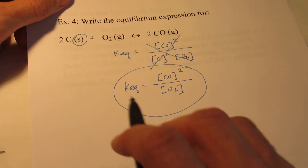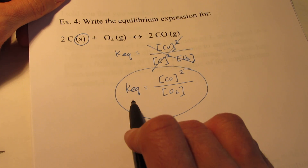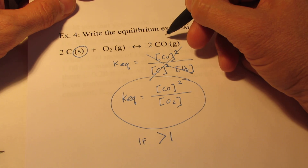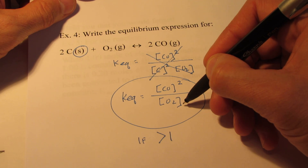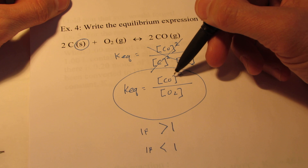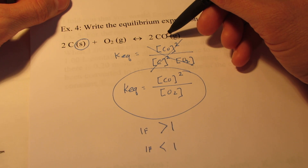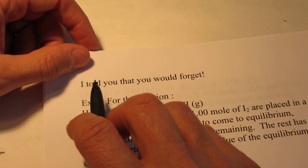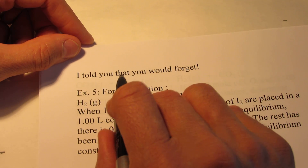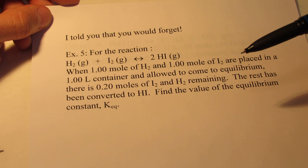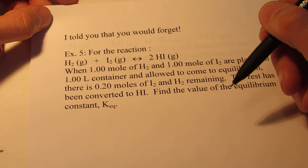Just as a reminder: if K-eq is a number bigger than one, that means I have a lot of product — my numerator is bigger than my denominator, so I have a lot of product relative to reactant. If K-eq is less than one, my numerator is smaller than my denominator, meaning I have a small amount of product created relative to the reactant remaining. We're going to end part one here, because in part two I want to do a little bit of arithmetic with our equilibrium expression and the value of our equilibrium constant.